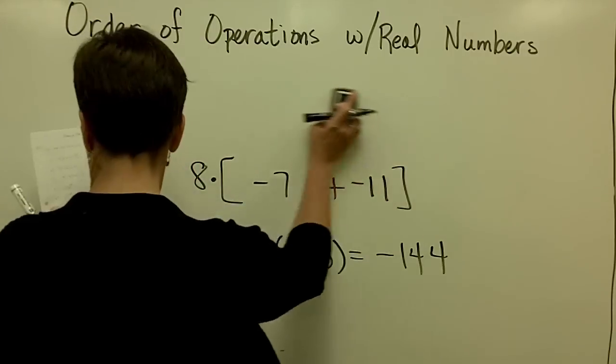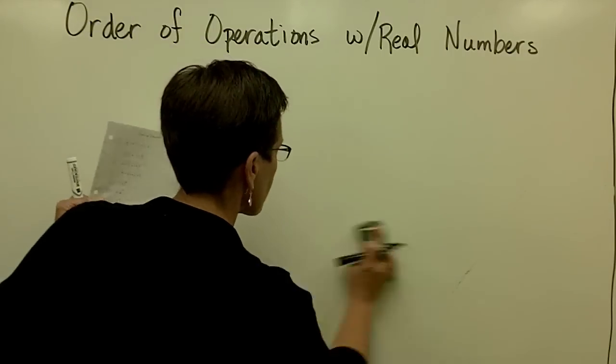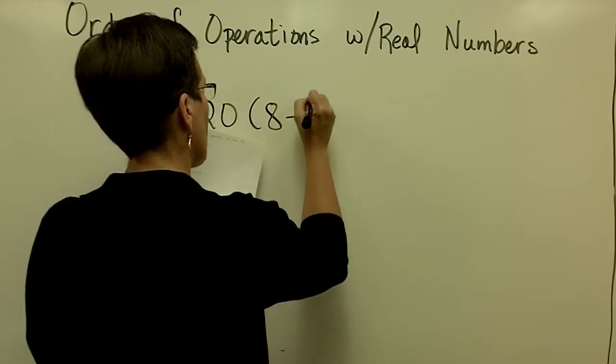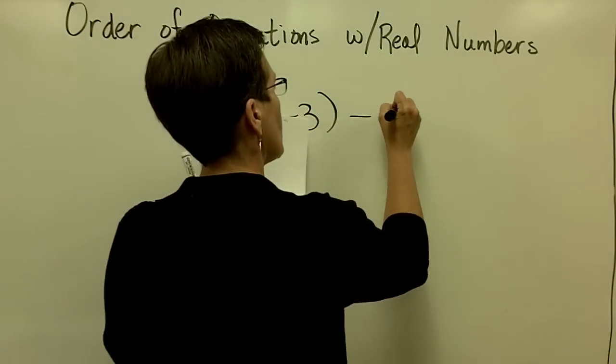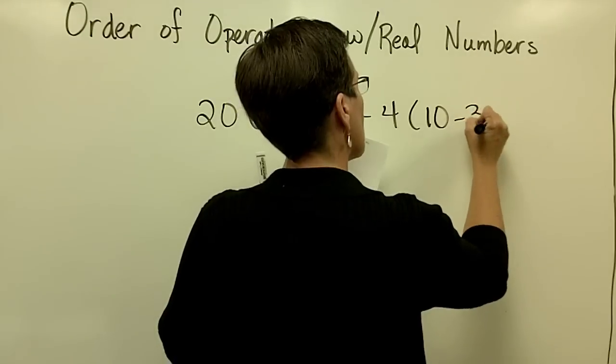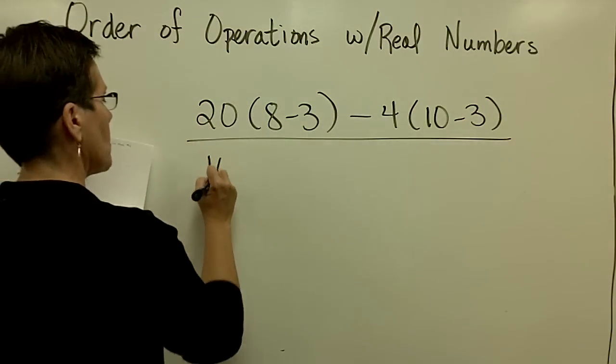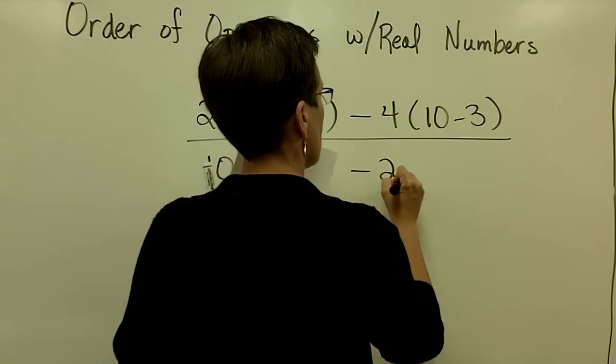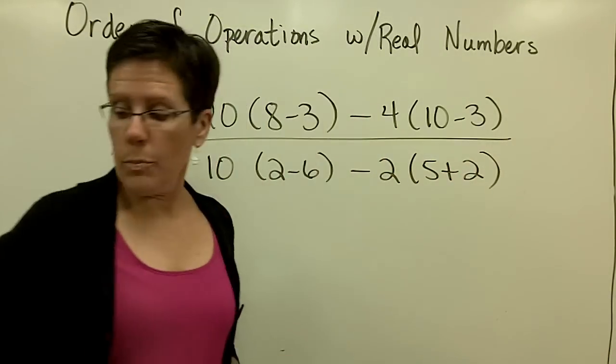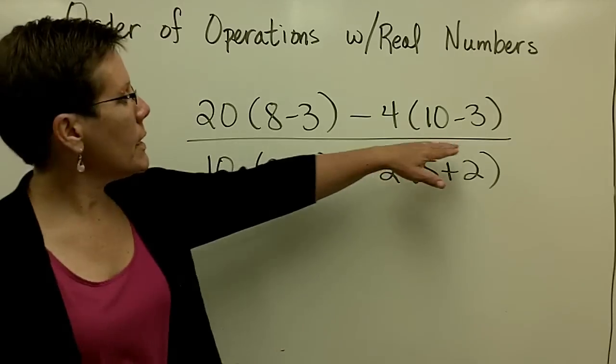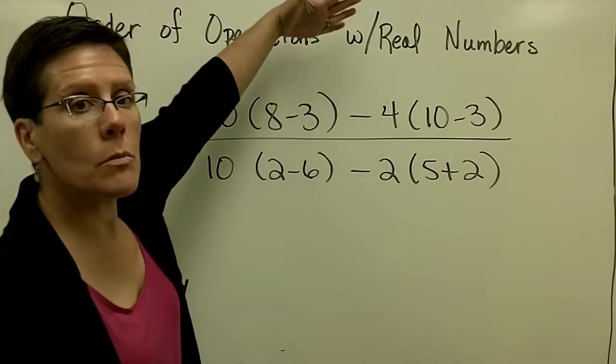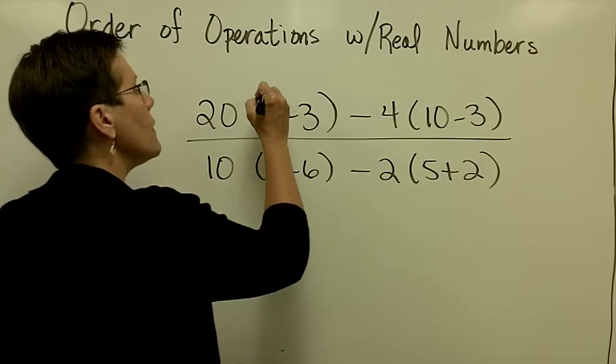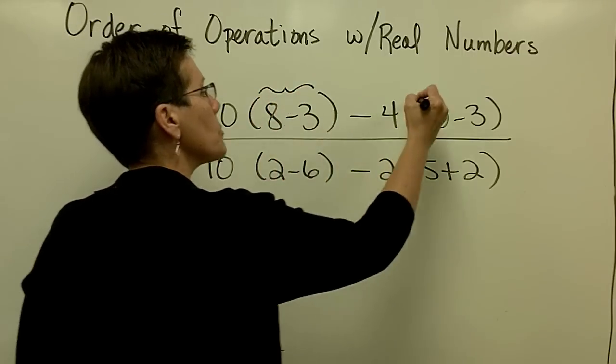Finally, let's do one more. Again, please remember that the big division bar says do what's in the numerator. Do what's in the denominator. Then do the division. So within that, I have to do what's in these parentheses here.